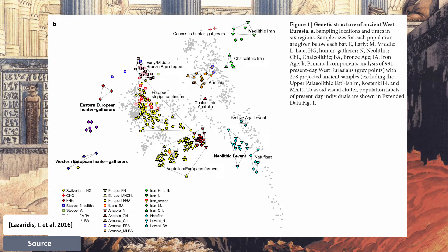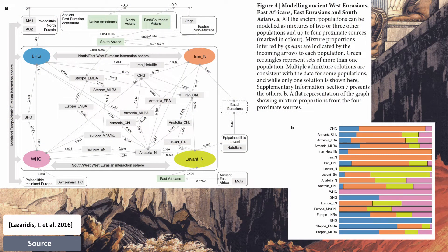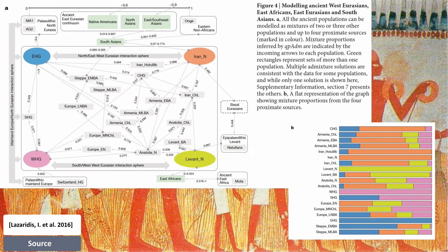On points four and five — admixture of Near Eastern farmers to later populations of the Near East and beyond, Europe, South Asia, and Africa — they find that all ancient populations can be modeled as a mixture of two or three other populations, and up to four proximate sources: Eastern and Western hunter-gatherers, Iran, and Levant Neolithic. The first farmers of the Levant trace approximately two-thirds of their ancestry to people related to Natufian hunter-gatherers and about one-third to people related to Anatolian farmers. Western Iranian first farmers cluster with the Iranian Mesolithic individual and more remotely with hunter-gatherers from the Southern Caucasus, sharing alleles at an equal rate with Anatolian and Levantine early farmers.